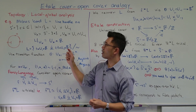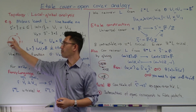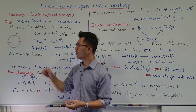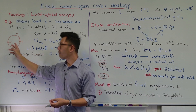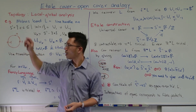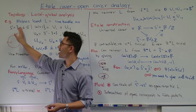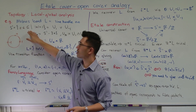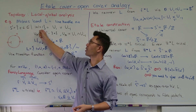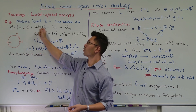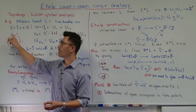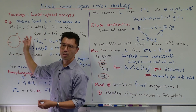So in the case of the Möbius band, what do we have? We want to think of this as a line bundle on the circle S1. And initially, I'm going to look at S1 as just the set of complex numbers with modulus equal to one.